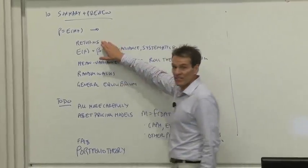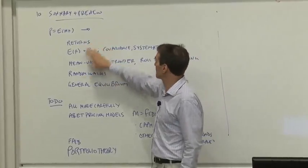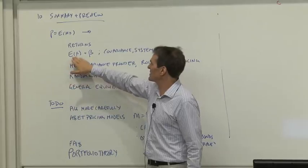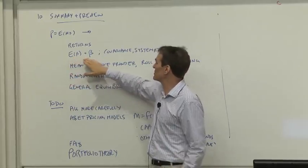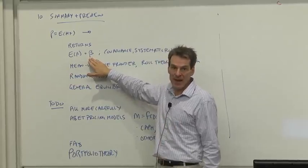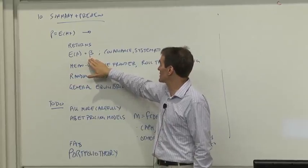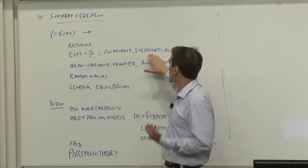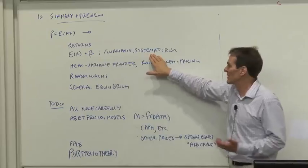We talked about returns in both discrete and continuous time. We re-expressed price equals expected discounted payoff into statements about expected returns, covariances, and betas, and we derived the look of the famous beta models that are throughout finance. We got the famous theorems that covariance matters for risk. Only systematic risk is priced by looking at that.